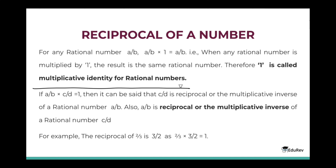Now, if a/b multiplied by c/d equals 1, then c/d is the reciprocal or multiplicative inverse of rational number a/b. Also, a/b is the reciprocal or multiplicative inverse of rational number c/d. For example, the reciprocal of 2/3 is 3/2, because 2/3 times 3/2 equals 1.